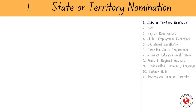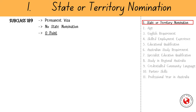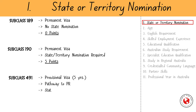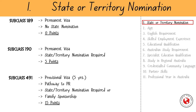Now let's break down all these factors. Factor 1: State or Territory Nomination. Subclass 189 is a permanent visa that does not require any sponsorship — you will not receive any points for it. Subclass 190 is also a permanent visa but requires nomination by an Australian state or territory, adding an extra 5 points to your score. Subclass 491 is a provisional visa granted for 5 years, leading to permanent residency after meeting specific conditions. It requires either state nomination or sponsorship by an eligible family member living in regional Australia, adding 15 points to your score.